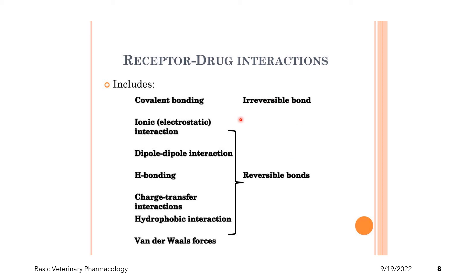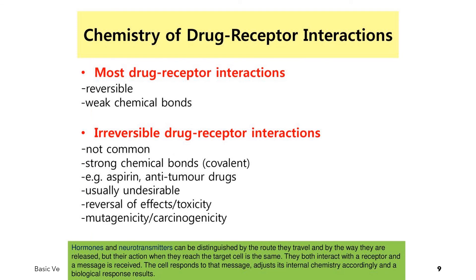In the case of other types of chemical bonds — such as ionic bonds, van der Waals forces, hydrogen bonding, and dipole-to-dipole interactions — these interactions are considered reversible in nature, meaning they can be dissociated at a certain point. Most drug interactions are reversible in nature because they involve weak chemical bonds.